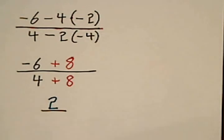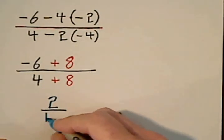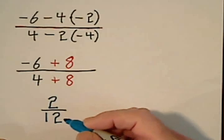In the denominator, the signs are the same, so we add and keep the sign. We get 12.